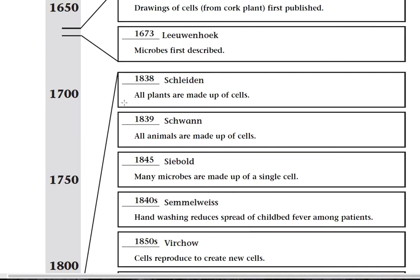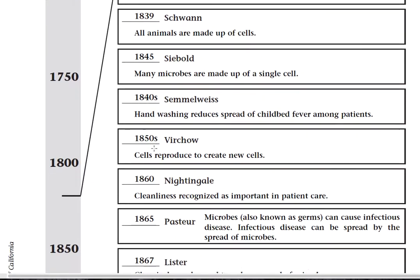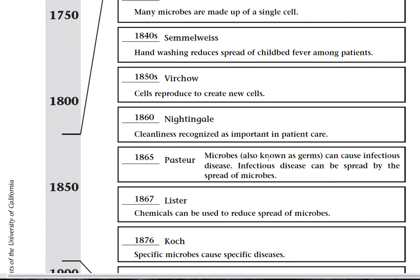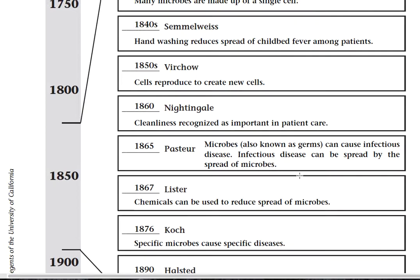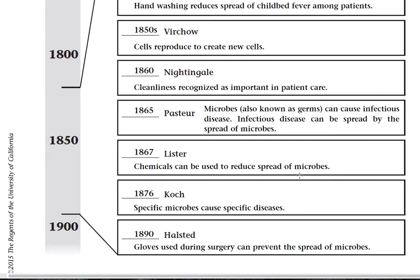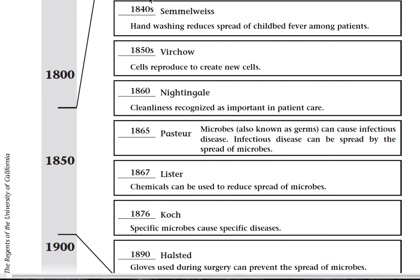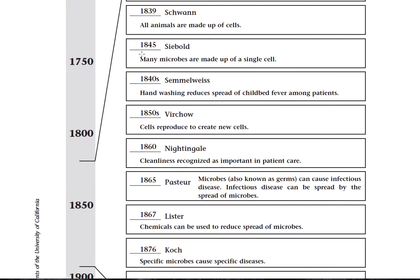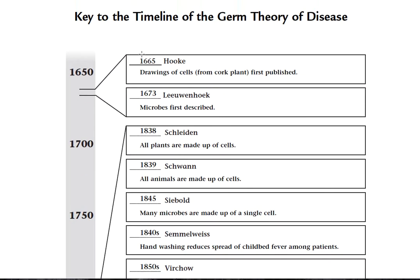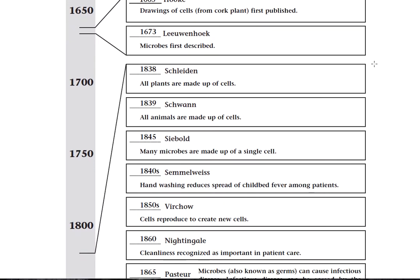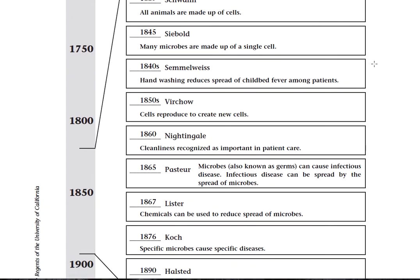Back to the timeline: Virchow — we already talked about that. Nightingale — cleanliness recognized as important in patient care. Pasteur — microbes, also known as germs, can cause infectious disease. Lister — chemicals can be used to reduce the spread of microbes. Koch — specific microbes can cause specific diseases. And Halstead — gloves used during surgery can prevent the spread of microbes. Make sure you fill out your timeline. There is the key to the timeline of the germ theory of disease — you might want to pause now to make sure you get it all copied down correctly. Thank you for listening, and have a great rest of your day.